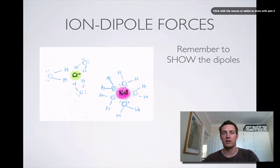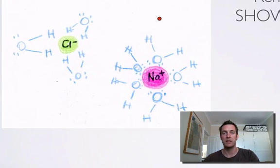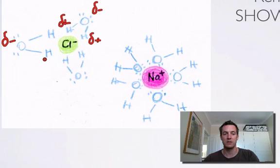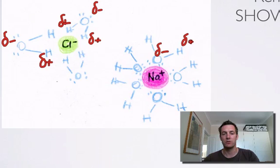Remember, ions don't have dipoles. Dipoles are uneven distributions of charge, so in a water molecule there's a slightly positive end and a slightly negative end, because of the electronegativity difference between oxygen and hydrogen. Every oxygen will be slightly negative and every hydrogen will be slightly positive.